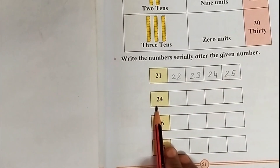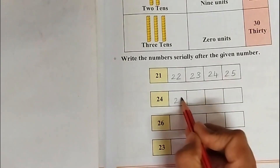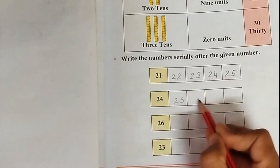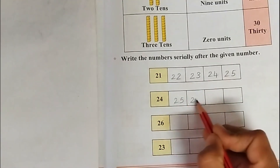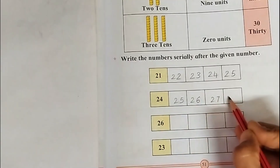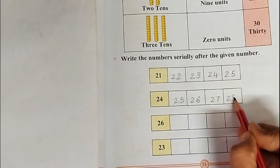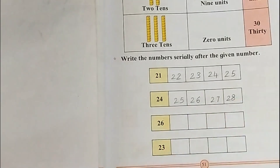After twenty-four comes twenty-five, after twenty-five comes twenty-six, after twenty-six comes twenty-seven, after twenty-seven comes twenty-eight.